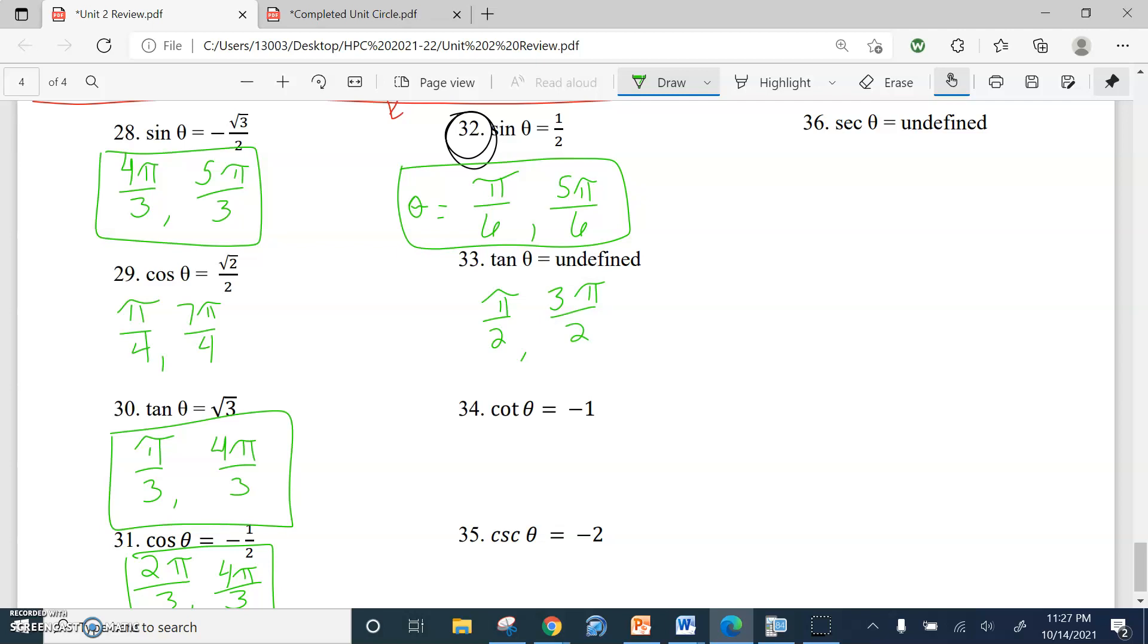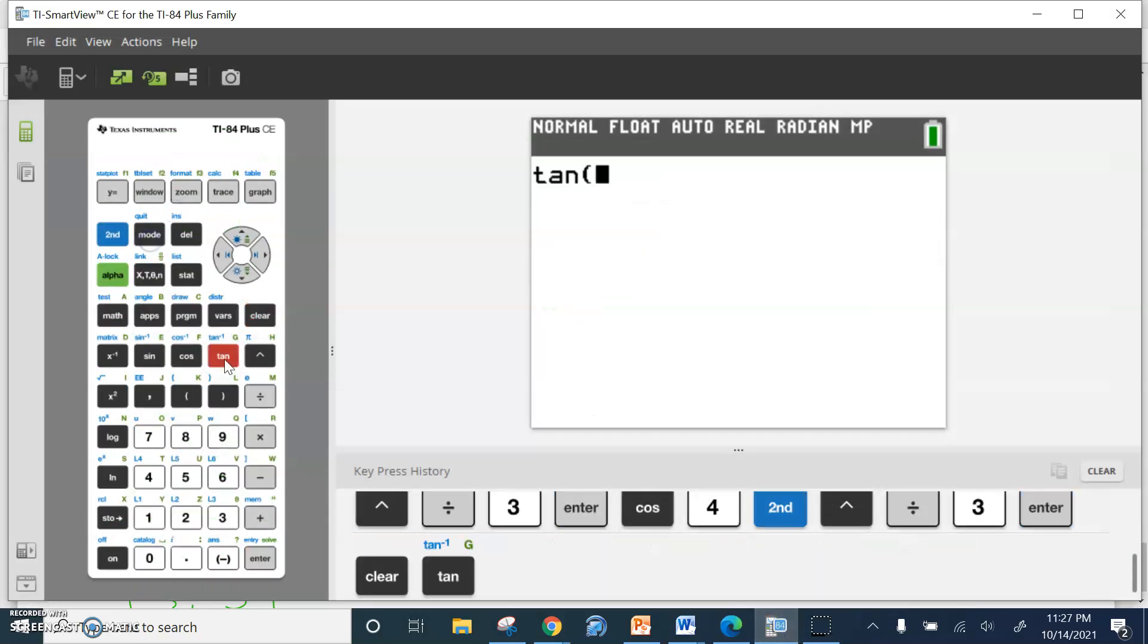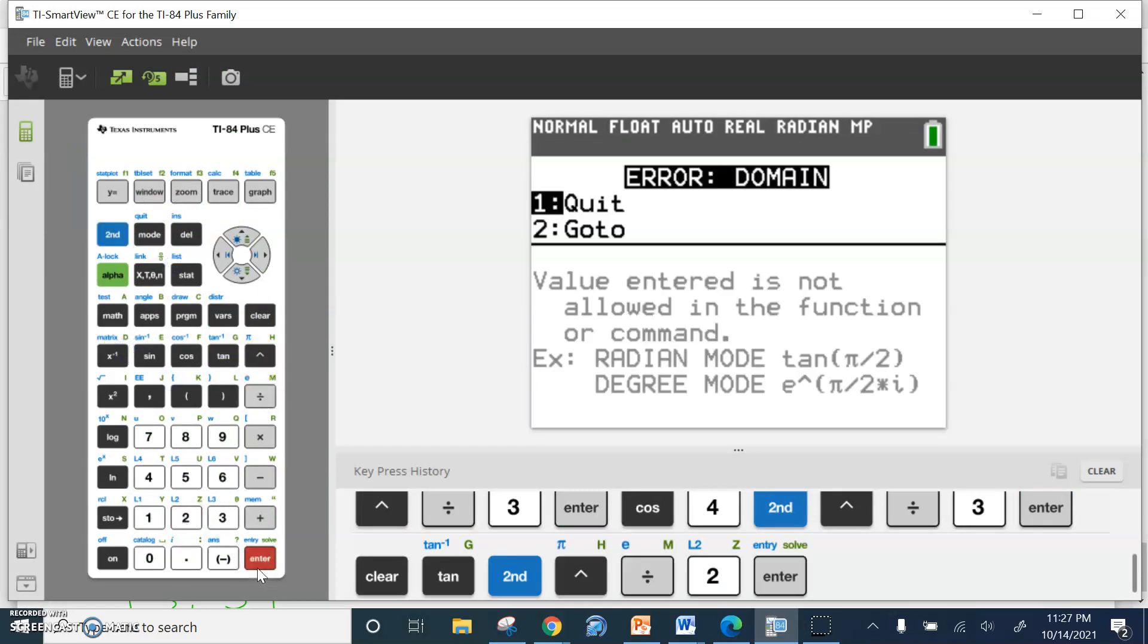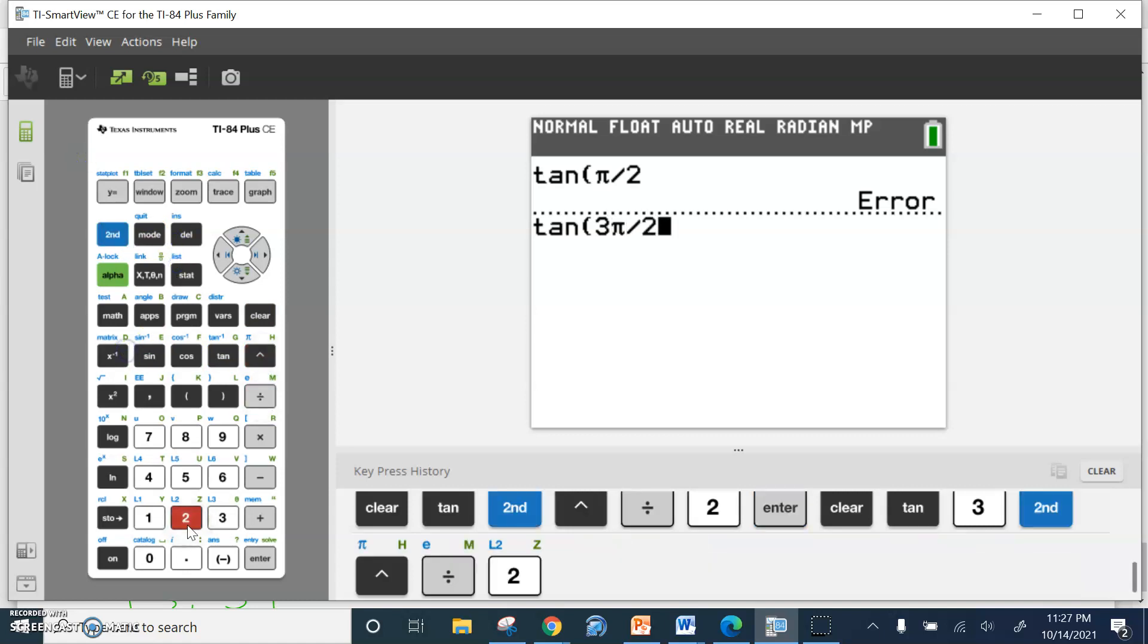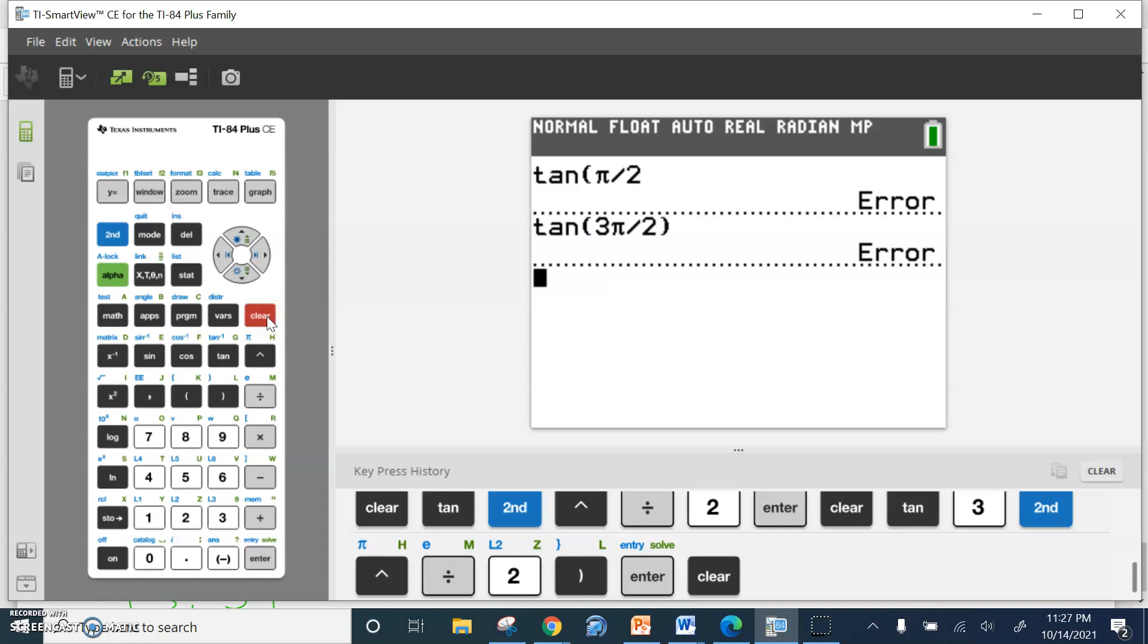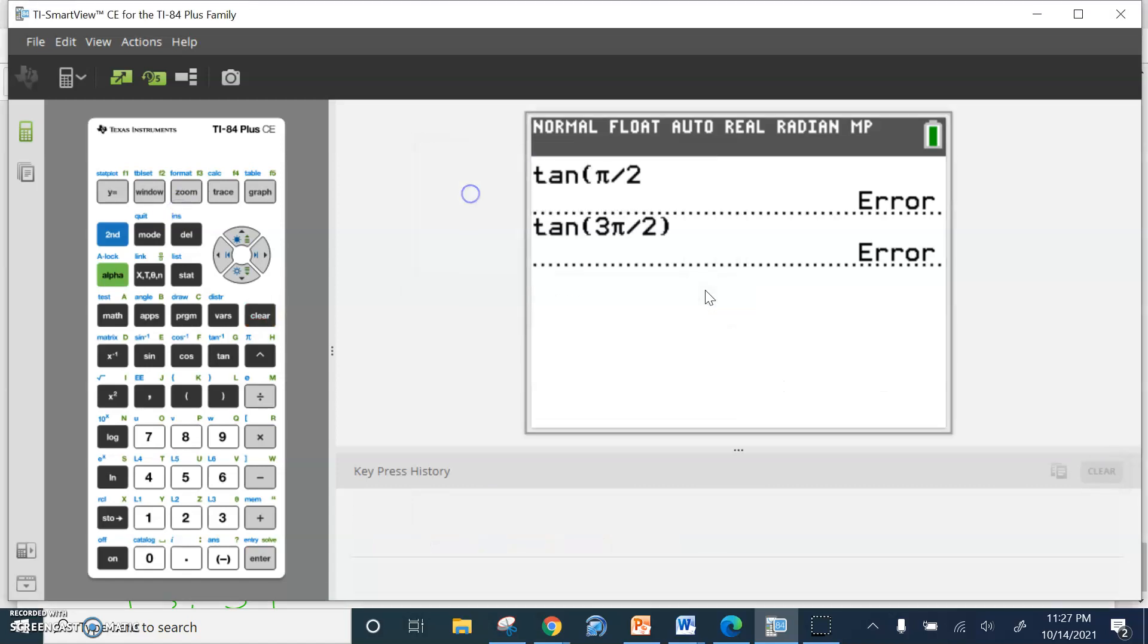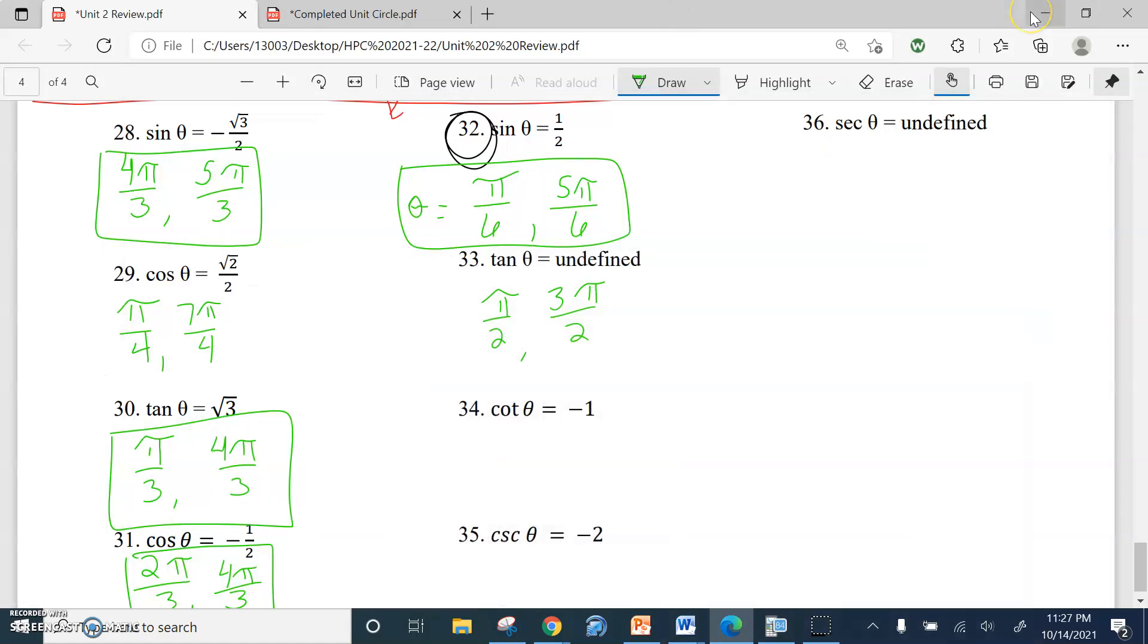And again, let's just check those tangent theta, tangent of second pi over two. Domain error. Doesn't work. Yep. That's what we wanted. Tangent of three second pi over two. And again, domain error. Just proving that things don't work. So there you have it. Answer. Moving on.